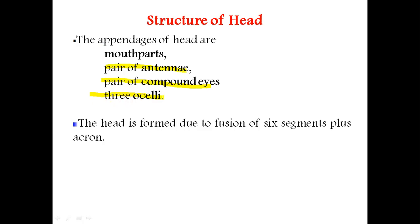The head has a sclerotized capsule also called the cranium. The compound eyes are located on the dorsolateral sides of the head region. The separate visual elements inside the compound eyes are called ommatidia.